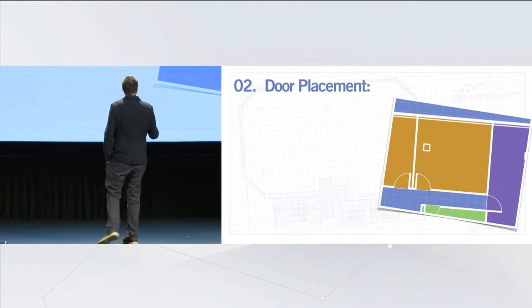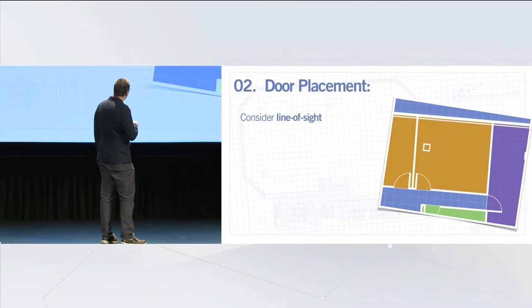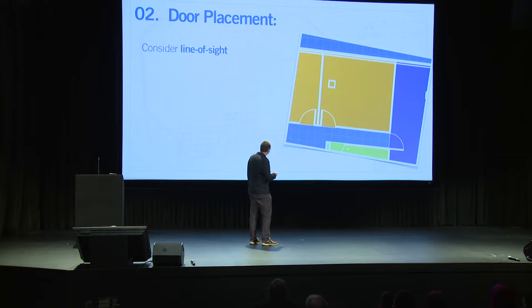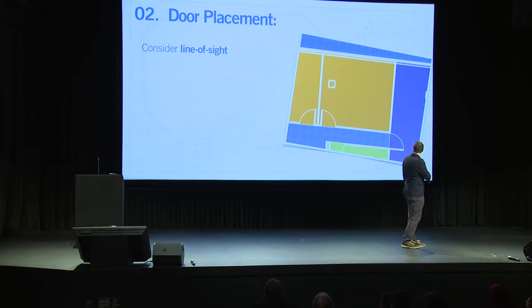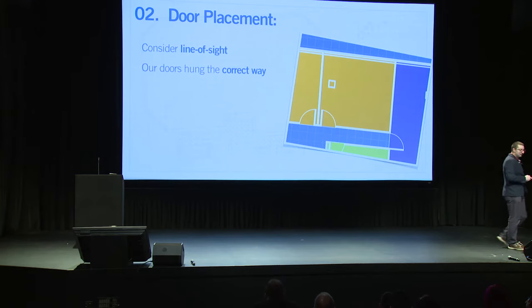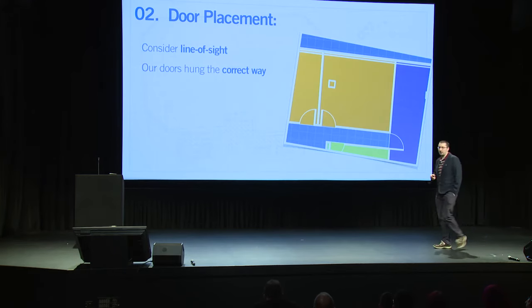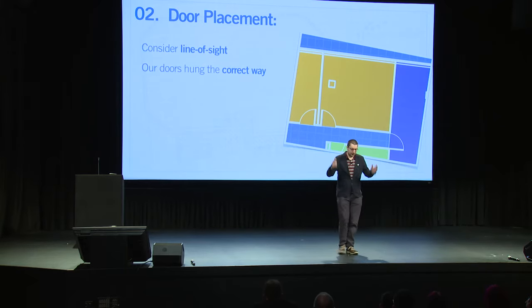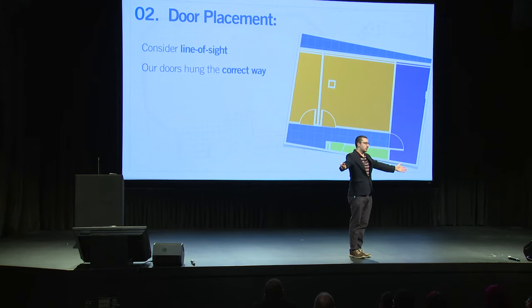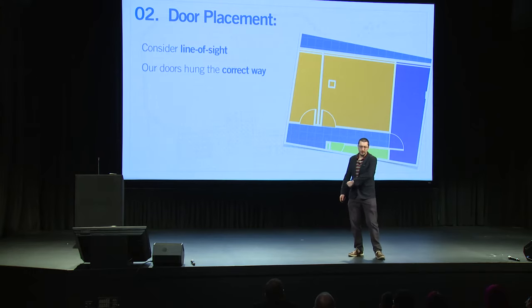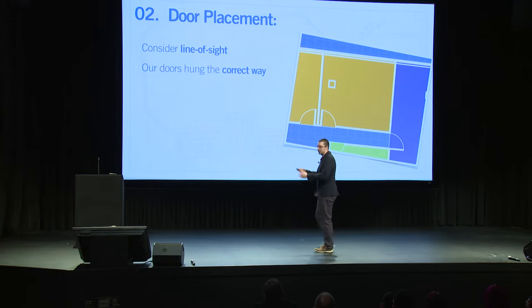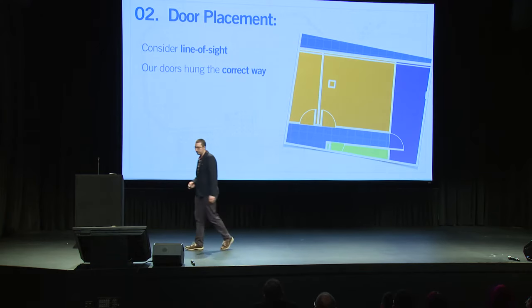Advice number two: door placement. Consider line of sight between open doors. We have one line-of-sight problem: if you're sitting in the green room and both doors happen to be open, you can see just a sliver into the observation room. So consider line of sight when placing your doors. Also, have your doors hung in the correct way — we failed on this and it's going to cost us money. When you open a door you're supposed to see as much of the room as possible, but for an observation room you actually want the door hung counter-intuitively so people walking past can't see in. We're going to have to take our doors down, spin them around, and pay for that.